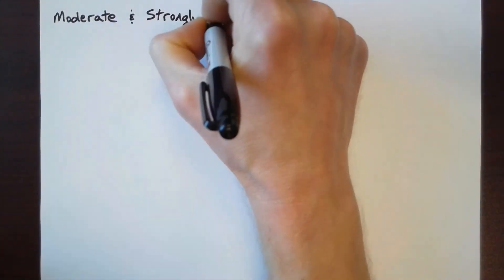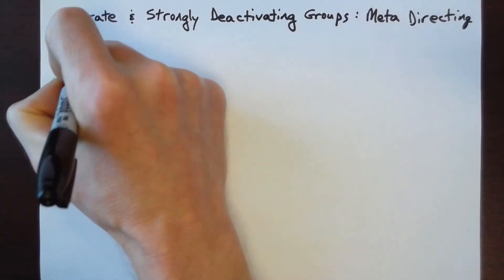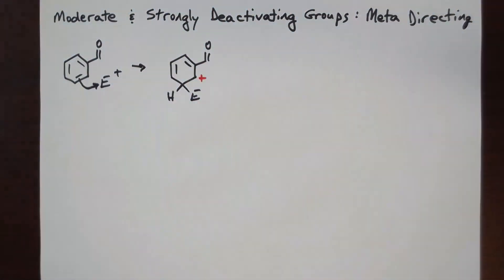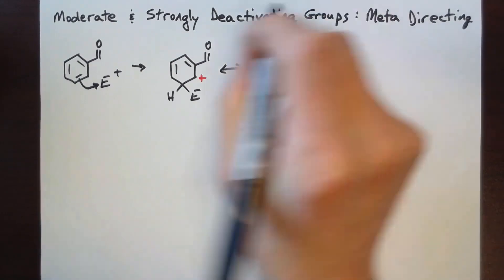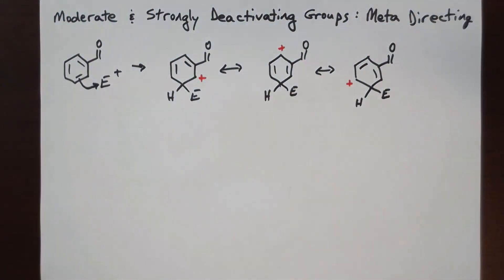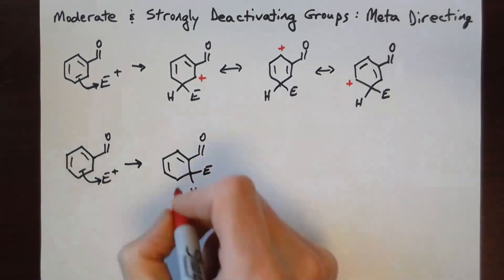Moderately and strongly deactivating groups are meta-directing. Remember, deactivating groups withdraw electron density from the ring, so the ring is overall less reactive toward electrophilic addition-substitution reactions. Benzaldehyde has a moderately deactivated benzene ring, and if the electrophile adds in the meta position, the positive charge can be shared among the three carbons that are not bonded to substituents.